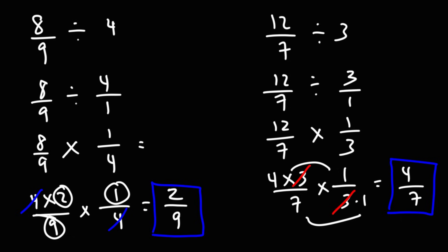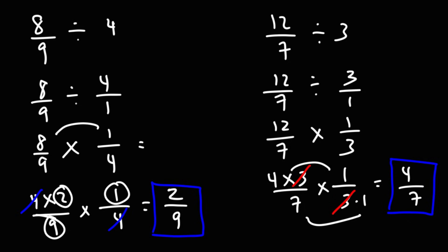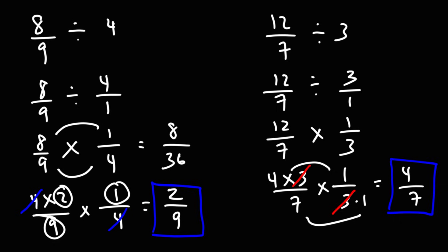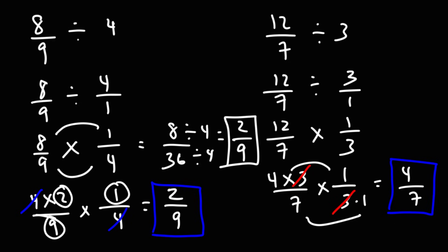By the way, for those of you who don't like canceling these numbers, if you were to multiply across you would have 8 times 1, and 9 times 4, which is 36. So 8 over 36 reduces to 2 over 9. You could divide 8 by 4 and 36 by 4: 8 divided by 4 is 2, 36 divided by 4 is 9. So you would get the same answer if you did it that way.